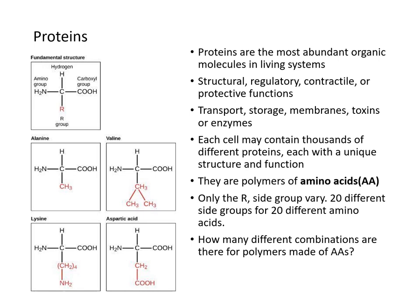Now let's move on to proteins. Proteins are the most abundant organic molecule in a living system. They provide structural, regulatory, contractile, and protective functions. They're involved in transport, storage, and membranes, they form toxins, and they often function as enzymes. Each cell contains thousands of different proteins, each with a unique structure and function. They are polymers of amino acids, and the fundamental amino acid structure is shown here.